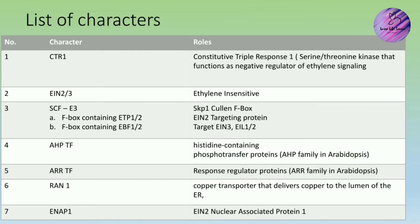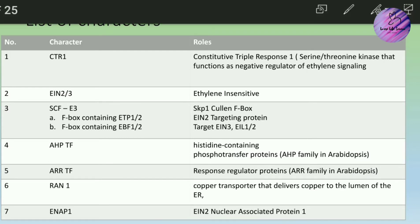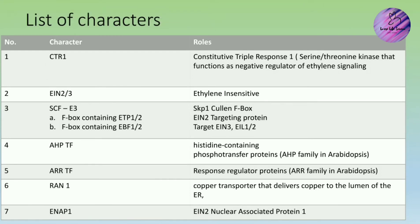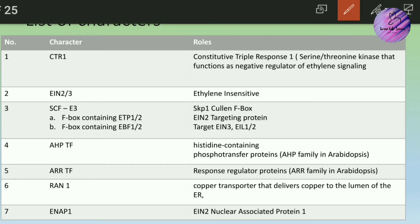Now I have enlisted the players involved in the signaling pathway. Once you understand the pathway it will be easy to learn their roles. The first character is CTR1, which stands for Constitutive Triple Response 1. It is a serine-threonine kinase, meaning it phosphorylates something. It is a negative regulator of ethylene signaling — when CTR1 is in active form and performing phosphorylation, the ethylene signaling response is turned off.